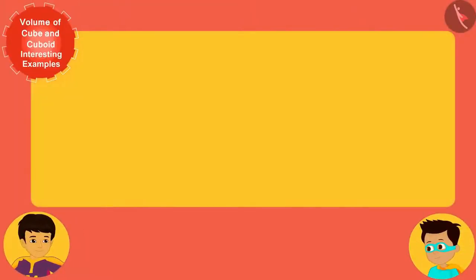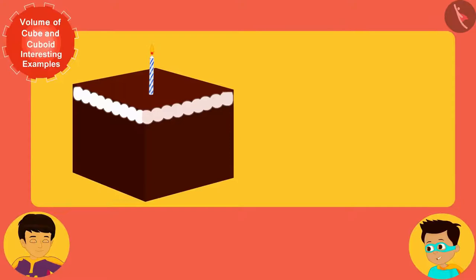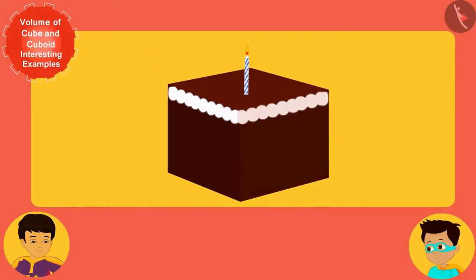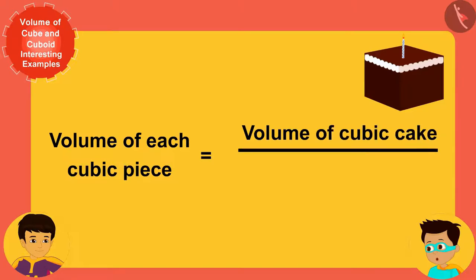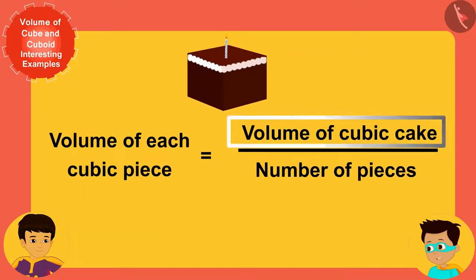Manas, because we are cutting this cubic cake into eight cubes of equal volume, we will firstly need to find the volume of each piece. We can easily find the volume of each smaller cube by dividing the volume of this entire cubic cake by eight. So let's first find the volume of this cubic cake.